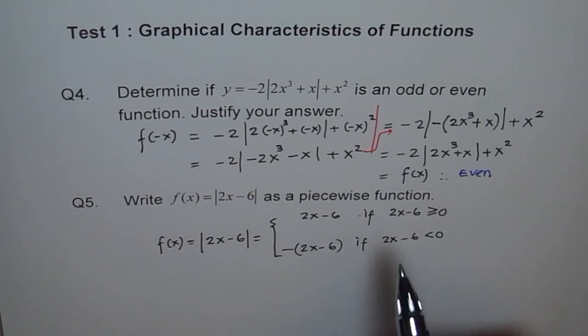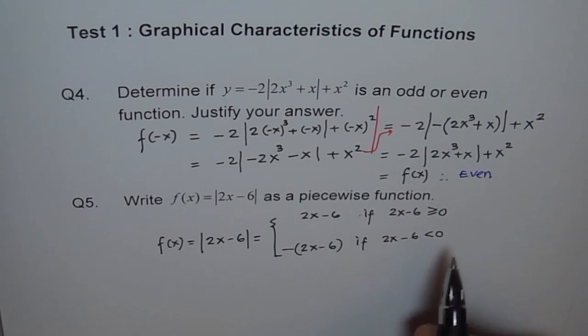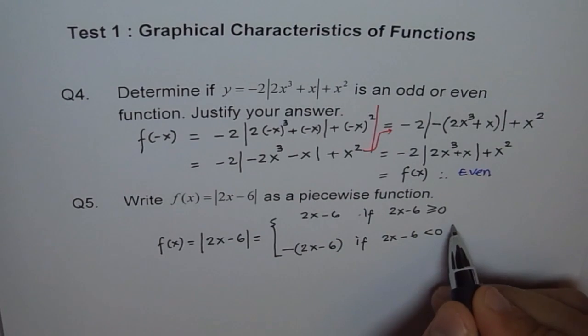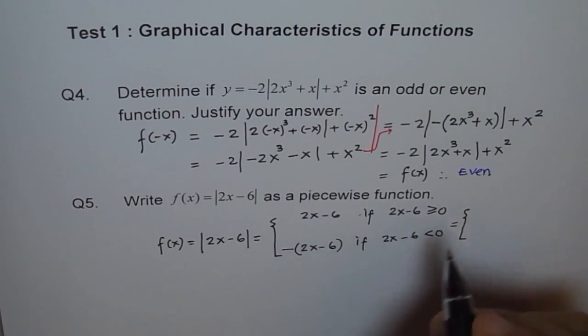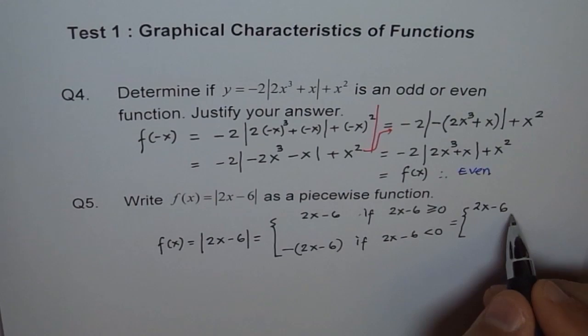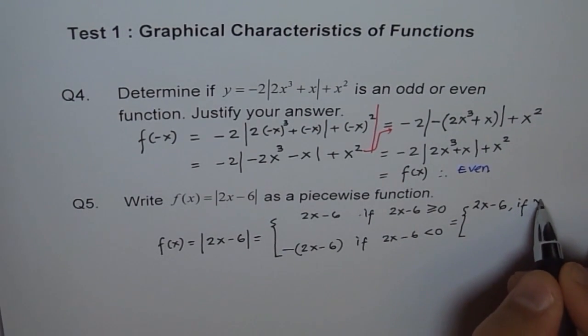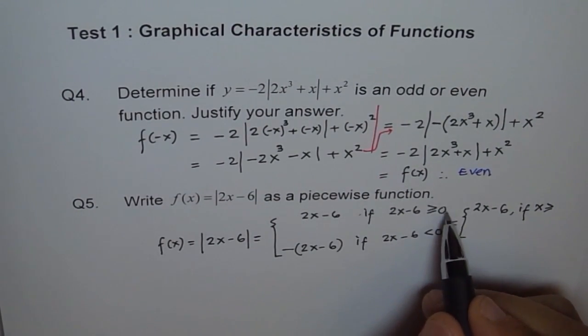Now, you have to see, when is this x positive? So you have to solve this inequality, correct? And write down your answer. So here, we can say, this is equal to 2x minus 6, if x is greater than or equal to—we'll take 6 on this side, so it becomes 6, and then divide by 2, right? 3, correct?